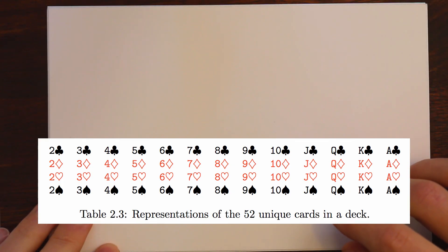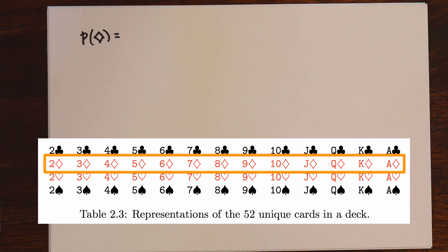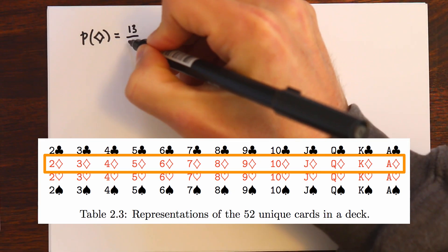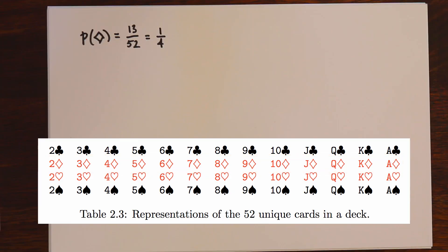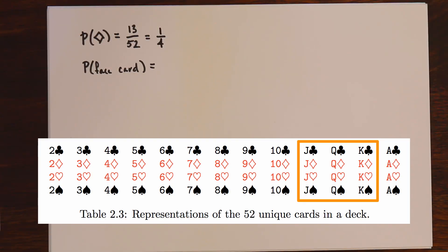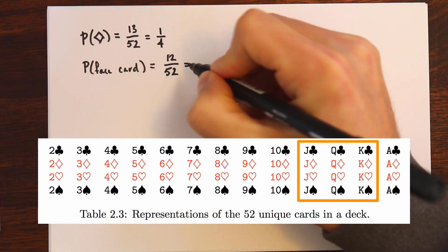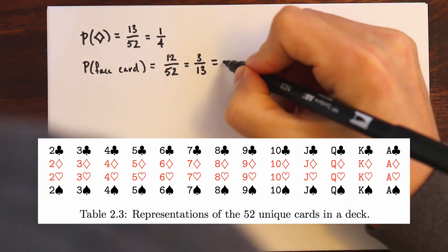Let's start by talking about what's the probability if we draw a random card from the deck that it's a diamond. With 52 cards in the deck and 13 diamonds, and since we're drawing a random card, each card has an equally likely chance. So we have 13 over 52, which is 1 fourth. We can also ask what's the probability of that card being a face card. Face cards are the Jacks, Queens, and Kings — we have 3 of those in each suit, so 12 out of 52, giving us a probability of 3 divided by 13, which is about 0.231.